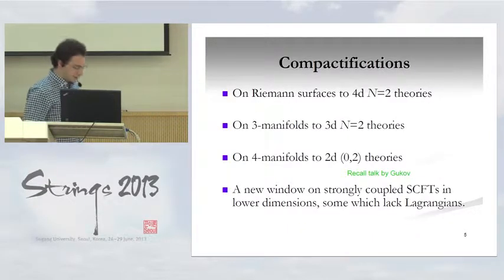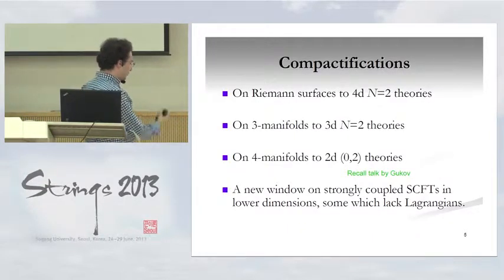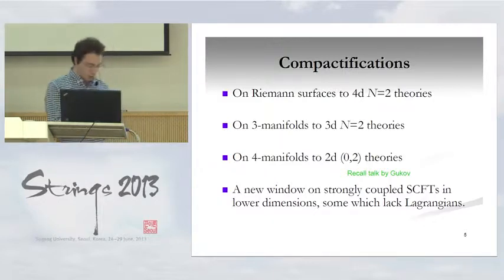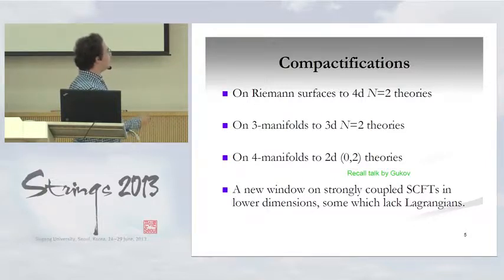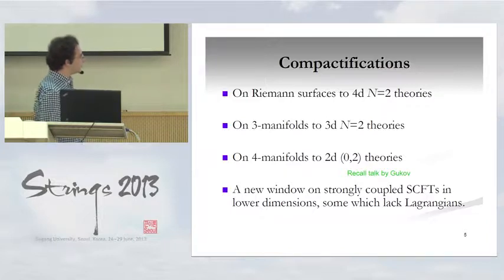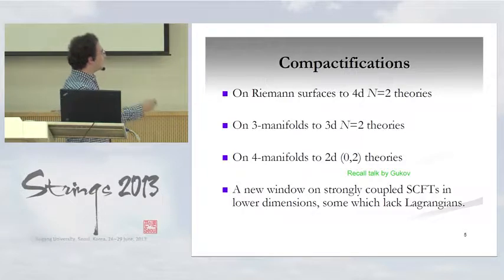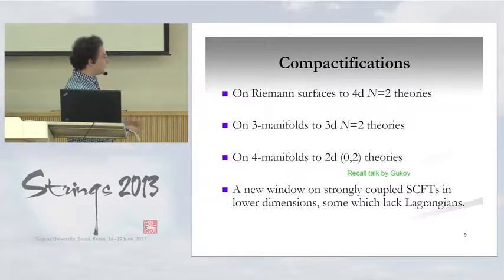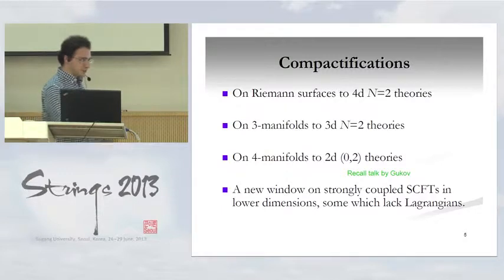One of the interesting things to do with this 2-0 theory is that it unifies and provides a new window into lower dimensional superconformal field theories. If you put it on a Riemann surface, you get 4D N=2 theories. On 3-manifolds — which is the case I'll talk about — you get these 3D theories with 4 supercharges, and we even heard the talk by Gukov about testing it on 4-manifolds. These are studied a lot by Gaiotto and many people. One of the interesting things is it gives you a different way to understand these superconformal theories, and some of them don't have a Lagrangian, so it's a new window into the space of field theories.